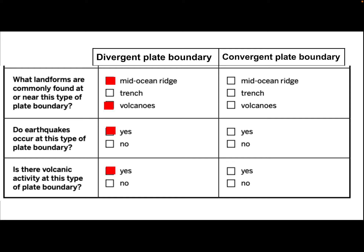When we compare that to the convergent plate boundary, the landforms commonly found would be a trench. Do earthquakes occur at this boundary? According to the sim, we looked at the patterns, and the answer is no — they don't occur at the boundary, they occur near the boundary, but that's not the way this question is worded, so the answer is no. And therefore, is there volcanic activity at this type of plate boundary? Again, the answer is no.